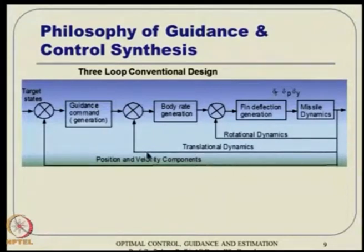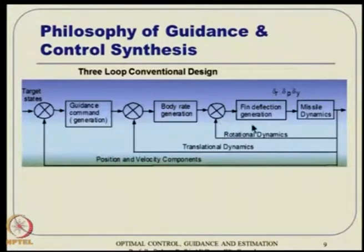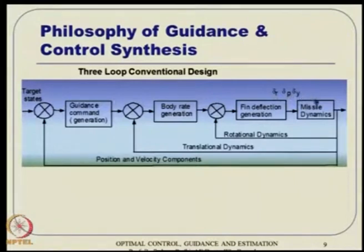Then there is one more loop that takes this guidance command and converts it to an equivalent body rate command. Body rate command generation happens, then you go to the inner loop which uses rotational dynamics — P_dot, Q_dot, R_dot equations — to generate delta_R, delta_P, delta_Y (roll, pitch, yaw). These are fed through the actuator dynamics and finally to the missile dynamics, giving course correction.